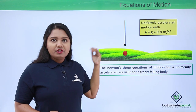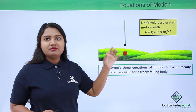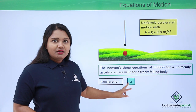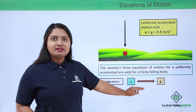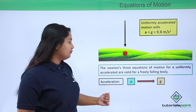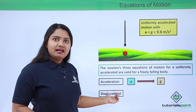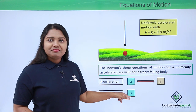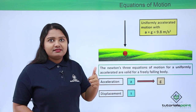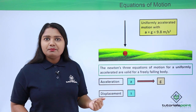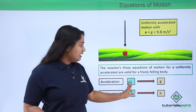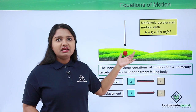There will be some small modifications in the symbols used. The acceleration 'a' in those equations will be replaced by 'g', since the acceleration here is specifically due to gravity. Also, the symbol for displacement 's' will be replaced by 'h', since we have a vertical distance or vertical displacement here rather than horizontal displacement.